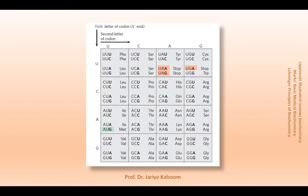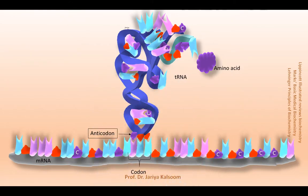In most cases, codons that specify the same amino acid differ only at the third base. The triplet code on the messenger RNA — each codon — determines which amino acid will be added in the polypeptide chain of the protein being synthesized.